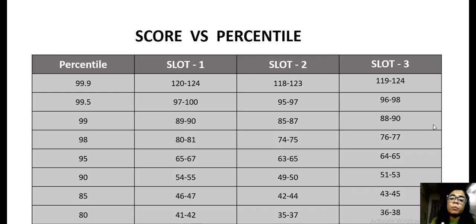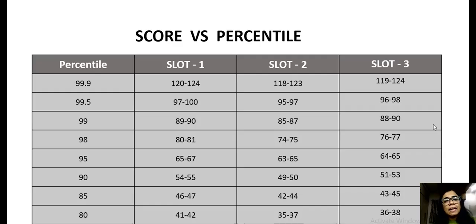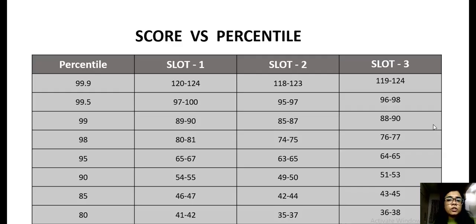Whereas for slot one, the score will be slightly scaled down because it was an easy slot. Slot three would be intermediate between slot one and slot two — their score will be slightly scaled down, because it was easier compared to slot two, but slot one will see a slightly greater scale down. So this is a brief analysis as far as all the slots are concerned.